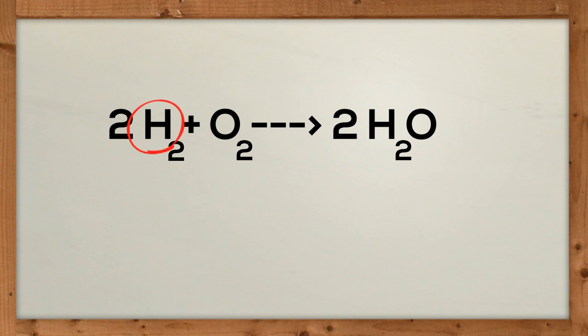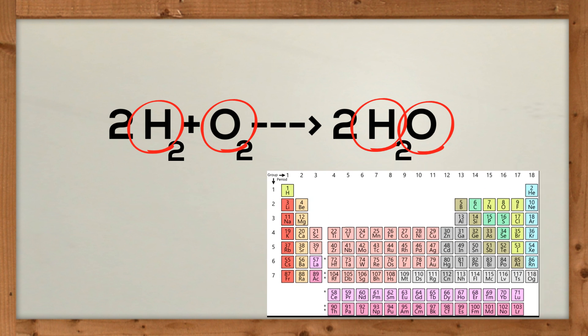Each capital letter represents a new element, and each element has a symbol. The symbol for every element can be found on the periodic table.